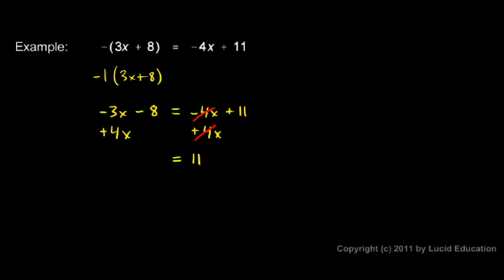On the left side negative 3x and positive 4x add up to a positive 1x or just x. And then I still have my negative 8. So I have x minus 8 on the left. x minus 8 equals 11.